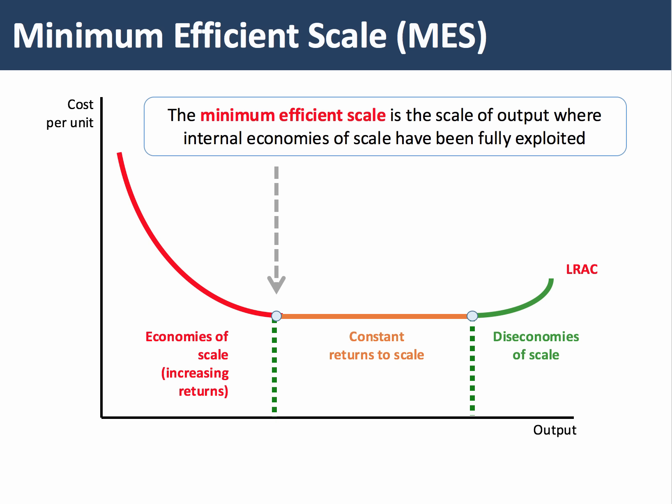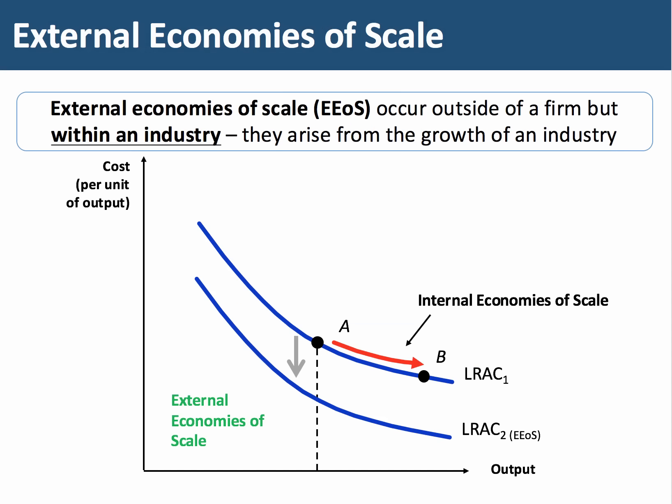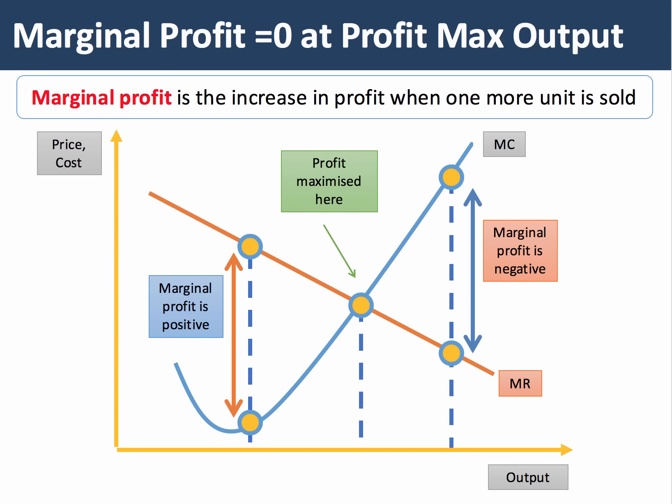Beyond another level of output further to the right, diseconomies of scale may set in — decreasing returns to scale — shown by an increase in long-run average cost. Diagram five is about external economies of scale, which arise from the growth of an industry. They are cost reductions resulting from an industry's expansion. While movement down along an average cost curve is internal economies of scale, external economies of scale represent a downward shift in a firm's long-run average cost curve.